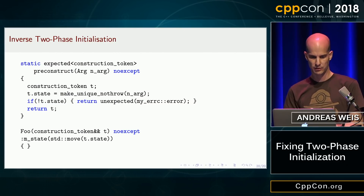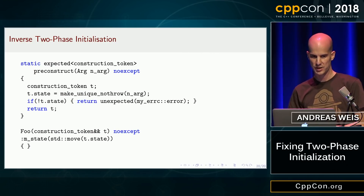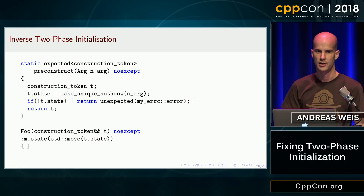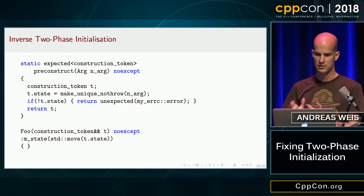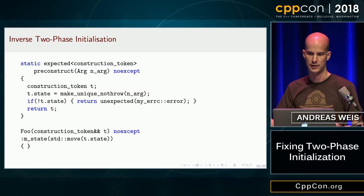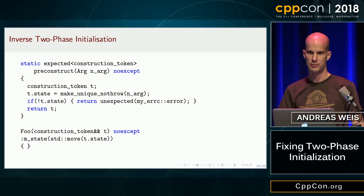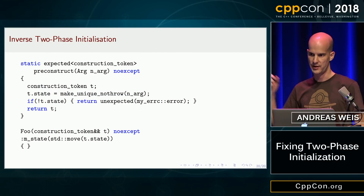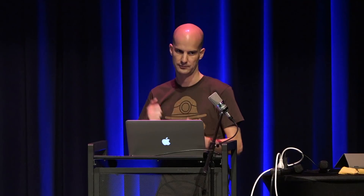Looking at the idiom closely, you'll notice we still have the weird construction problem, but we moved it entirely to the construction token. Since the construction token is not an object we want to keep around — we only construct it temporarily and immediately consume it to construct the final object — it doesn't hurt us. The object we actually care about, of type Foo, is now well-behaved and constructs as expected.